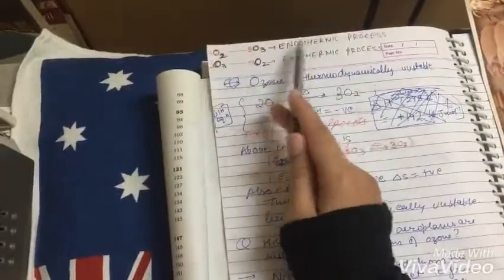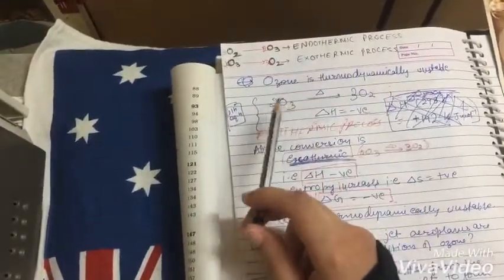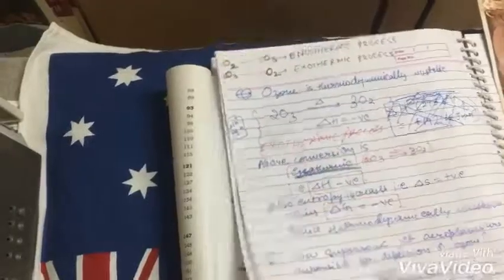Next, O2 to O3 is endothermic, O3 to O2 is exothermic. Ozone is thermodynamically unstable. O3 to O2 plus nascent oxygen.